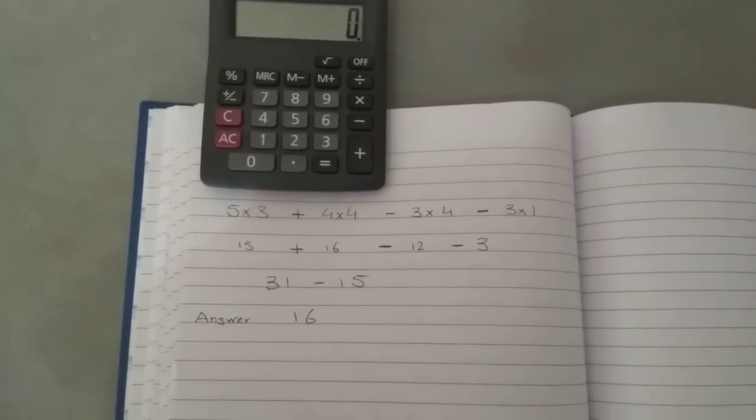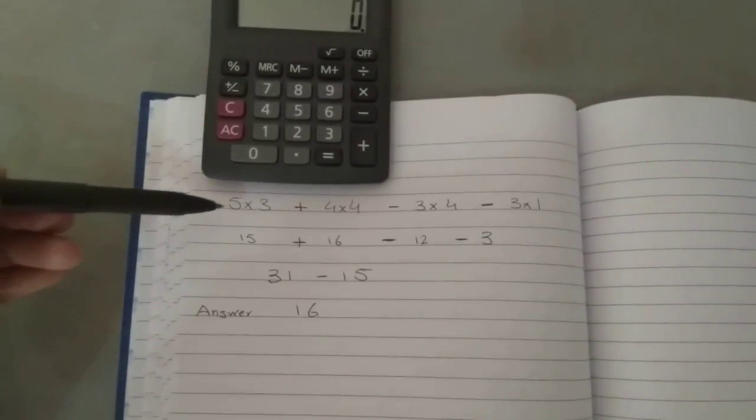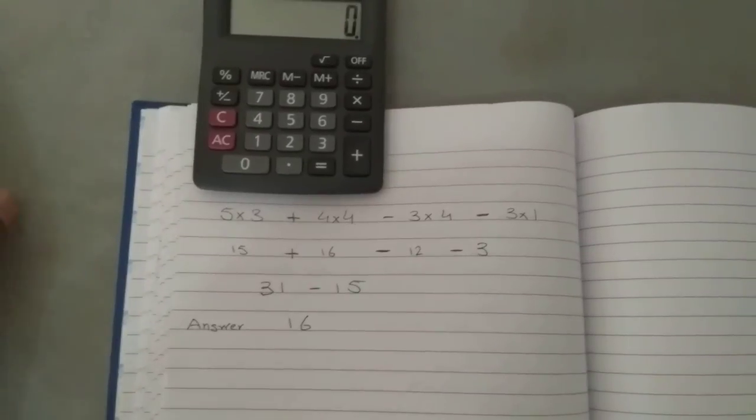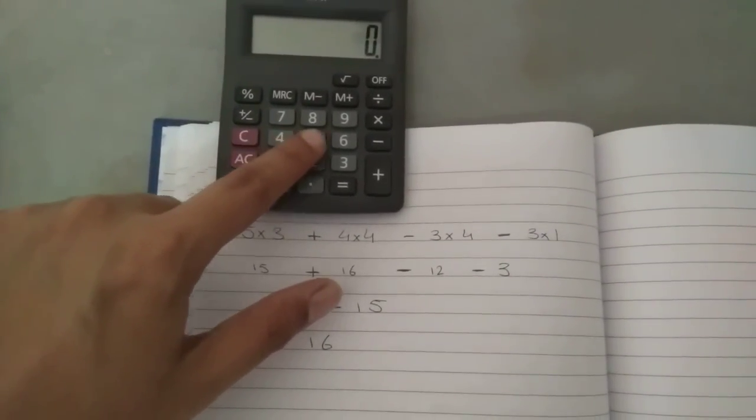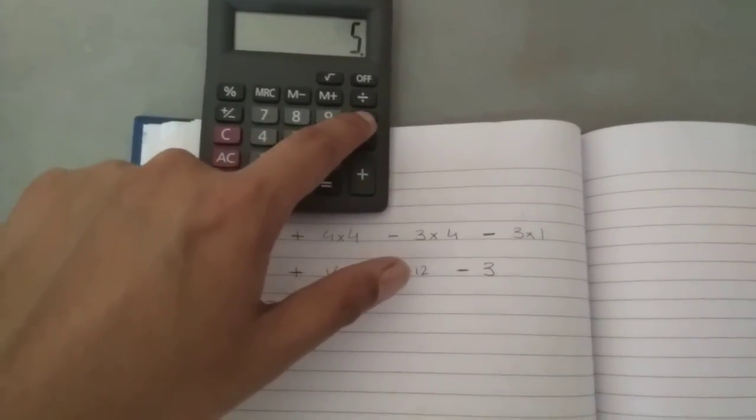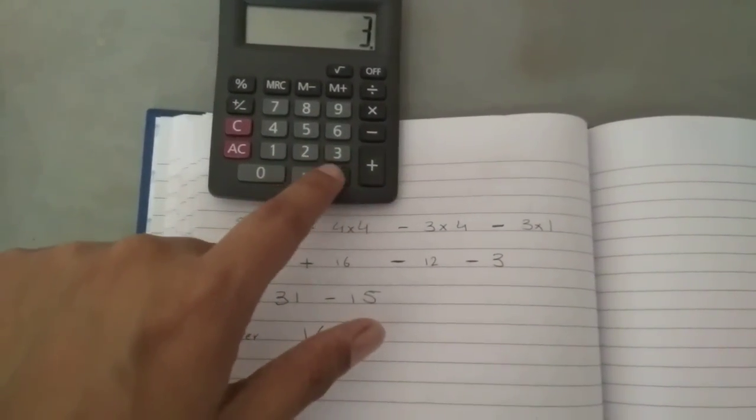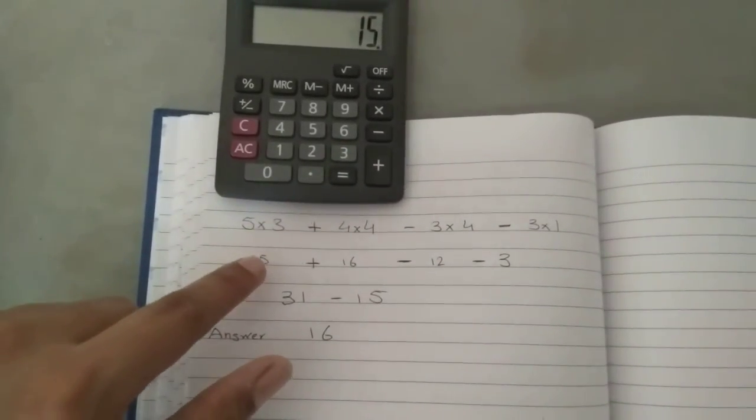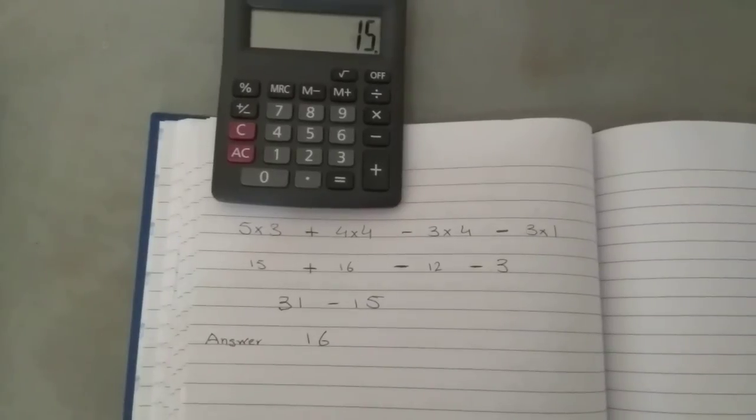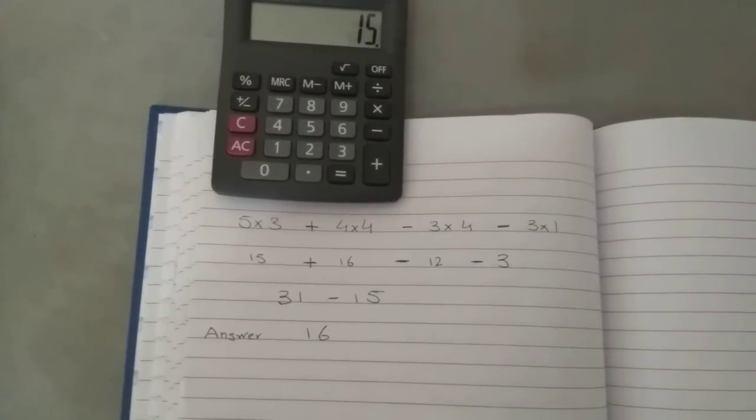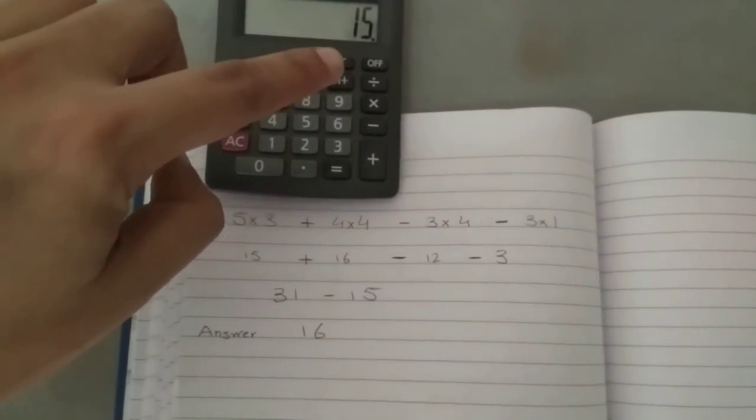I will show you how exactly it works. For example, if you see here 5 × 3, I will do the same on the calculator. 5 × 3 equals 15, as you know. So that's 15.